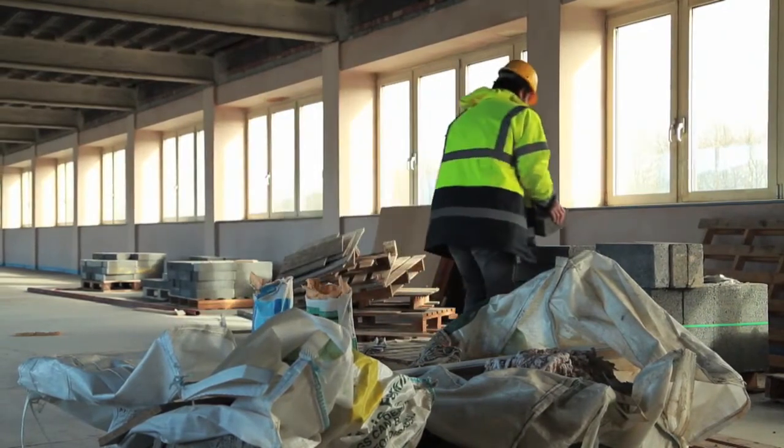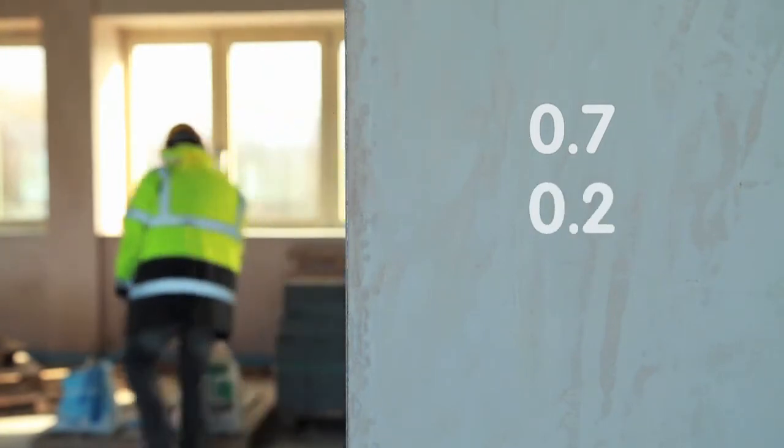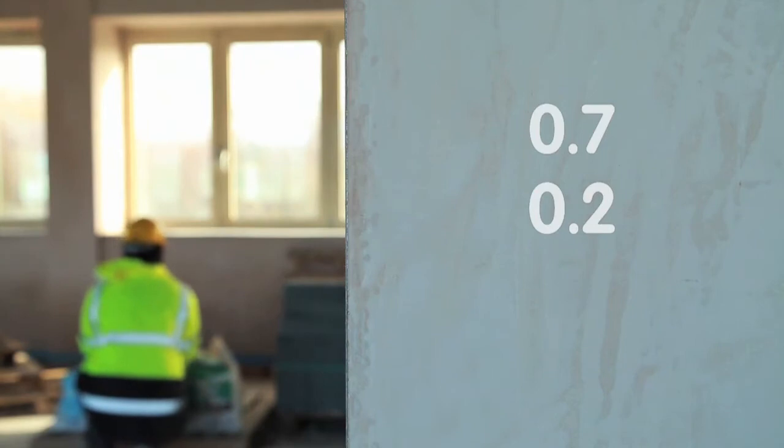Ashok works as a builder. In a typical week, the probability he'll be working on a building site is 0.7. The probability he'll be working during the weekend is 0.2. Calculate the probability that Ashok will be working on the building site during the weekend.